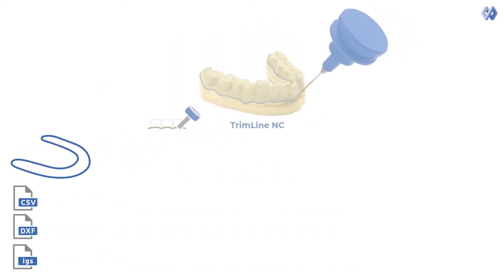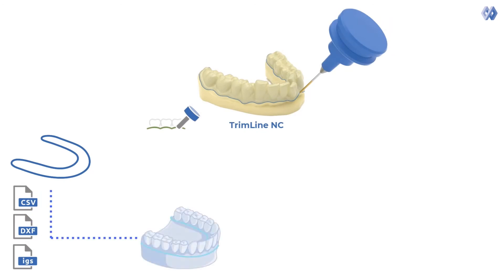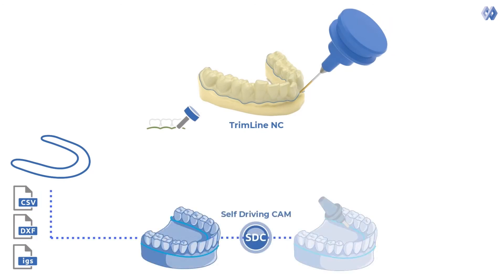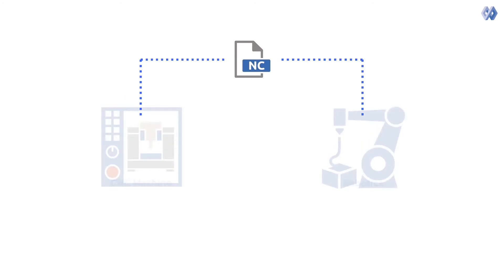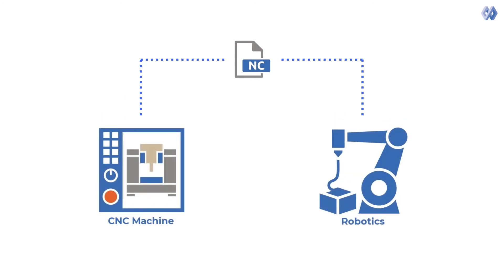Clear Aligner Trimline NC then automatically calculates the most efficient 4-axis or 5-axis trimming collision-free toolpath and exports the NC file. Trimline NC can generate NC code for either CNC machines and robotics.